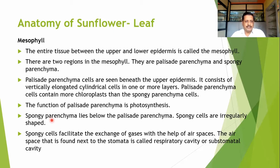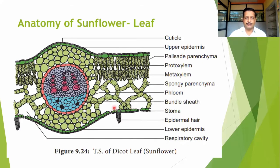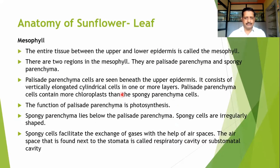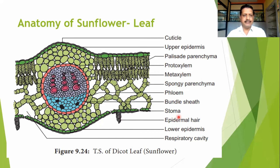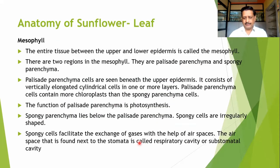Spongy parenchyma lies below the palisade parenchyma. These are irregularly arranged cells with a loose arrangement, and spongy cells facilitate the exchange of gases with the help of air spaces present in them. These air spaces facilitate gas exchange and connect to the stomata via the sub-stomatal cavity. The stomatal openings directly open to the air spaces present between the mesophyll, indicating that they directly help in gaseous exchange.